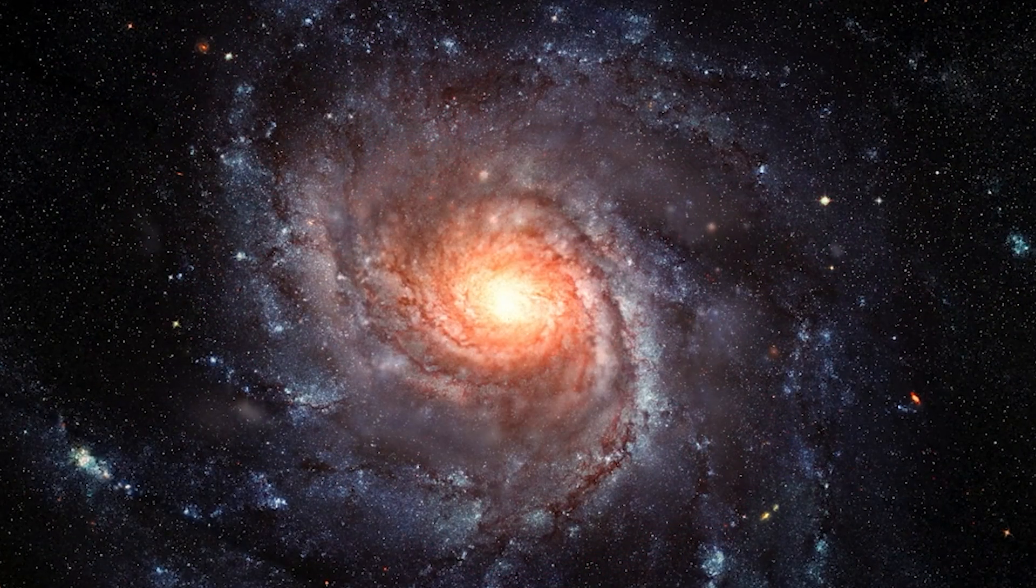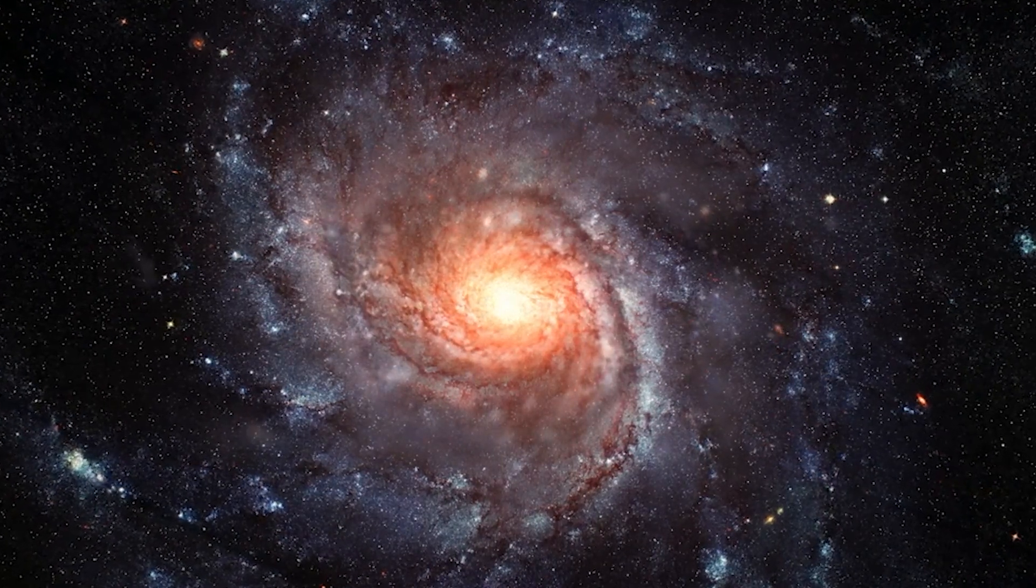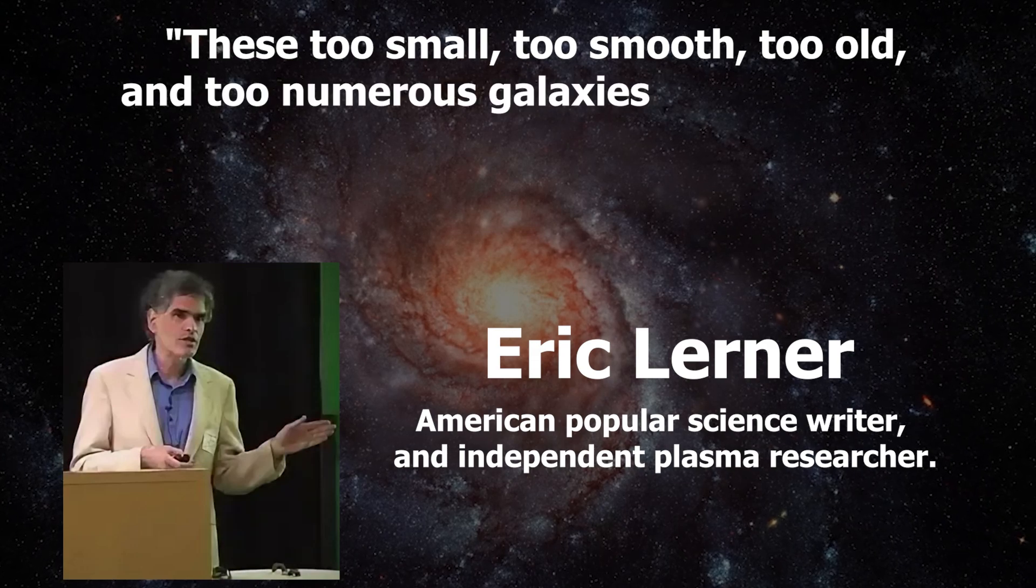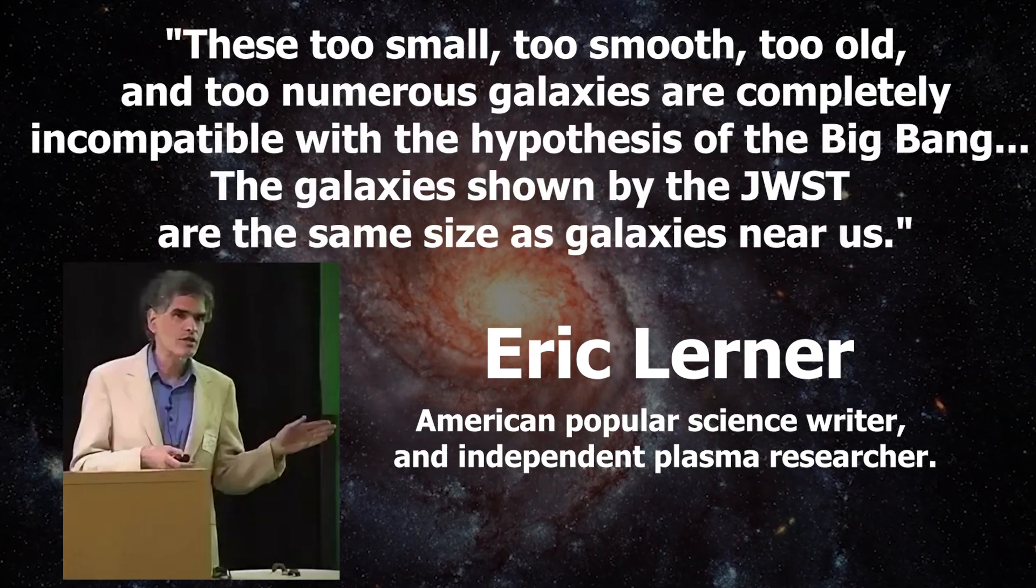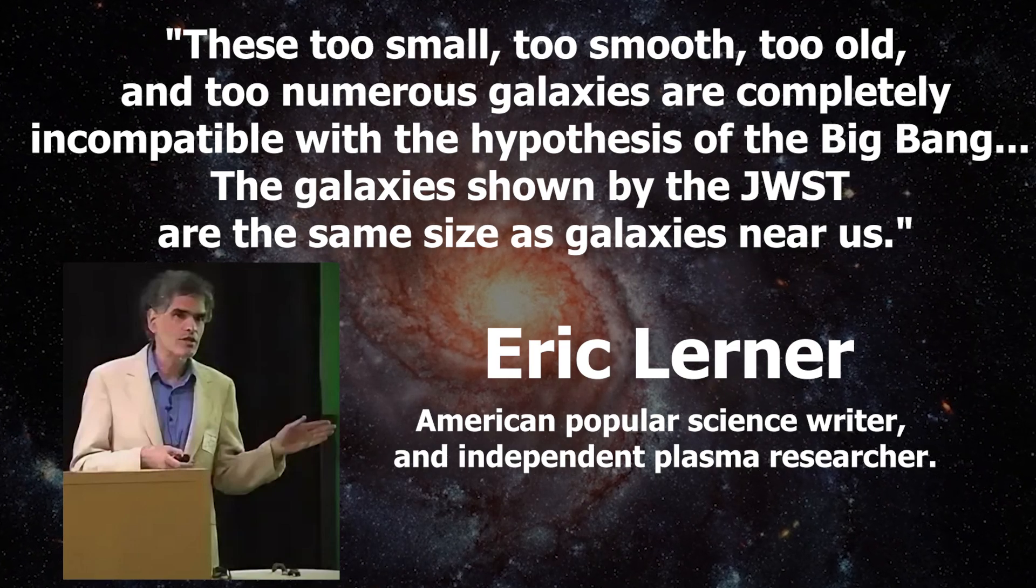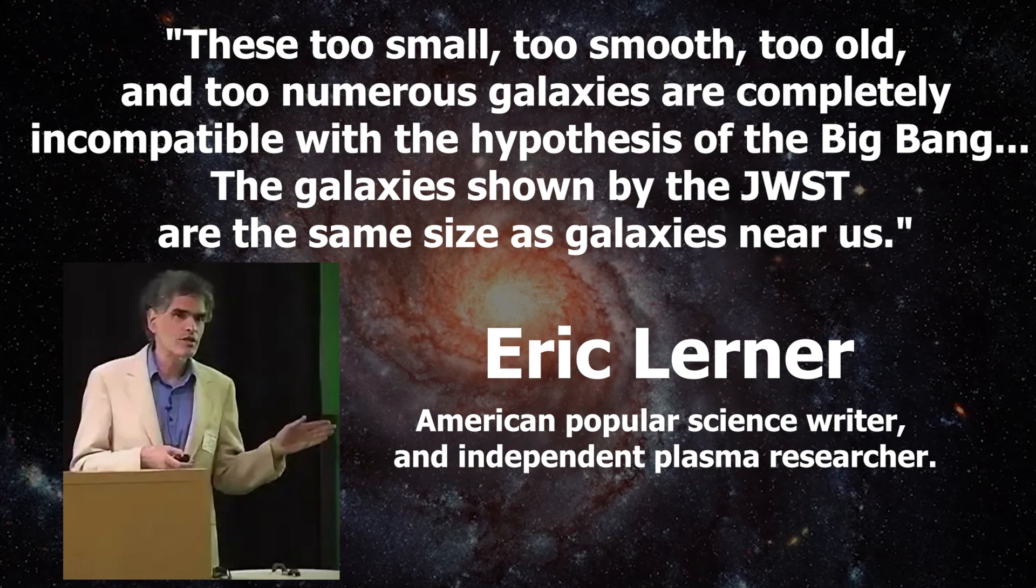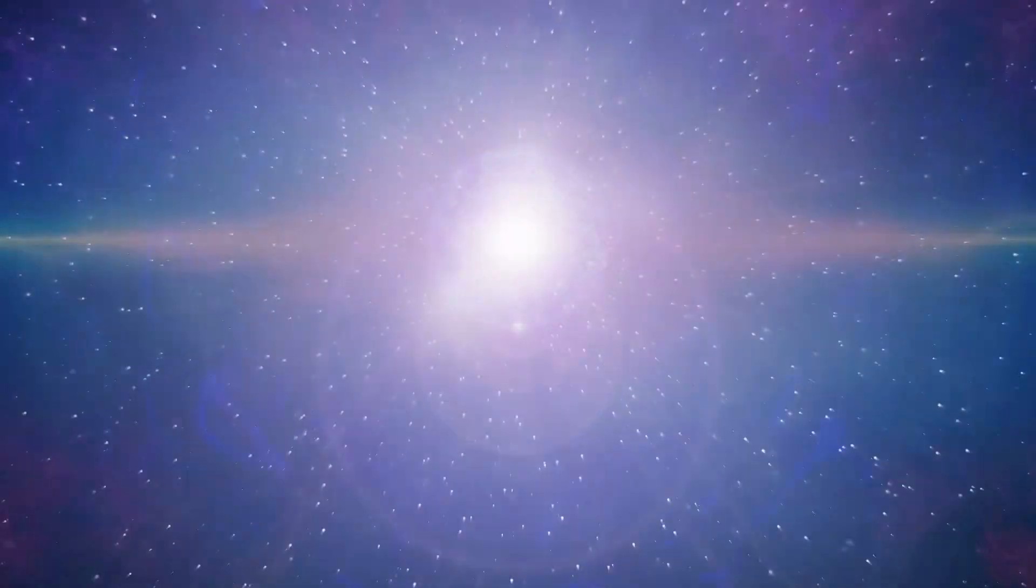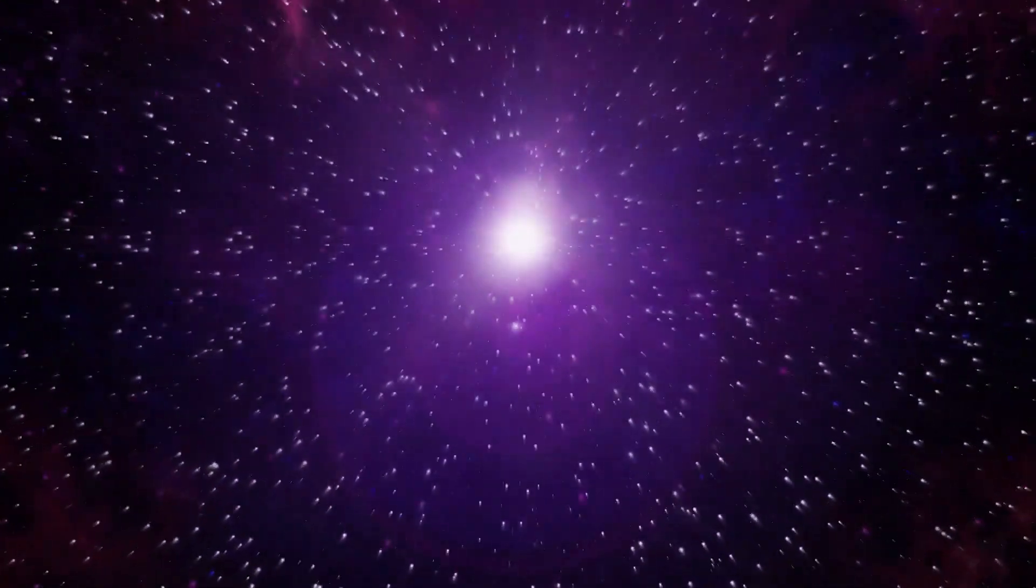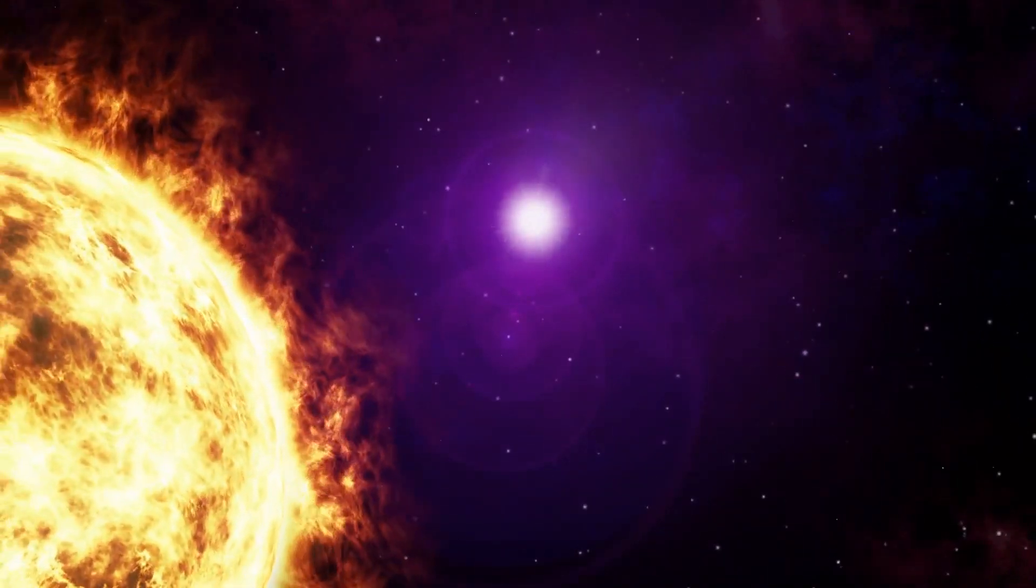In the article from the Institute of Arts and Ideas, Eric Lerner writes about the images from the Webb Telescope. These two small, two smooth, two old and two numerous galaxies are completely incompatible with the hypothesis of the Big Bang. The galaxies shown by the JWST are the same size as galaxies near us. According to the Big Bang Theory, the objects that formed shortly after the birth of the universe should remain in a rudimentary state, but they are almost indistinguishable from modern ones.